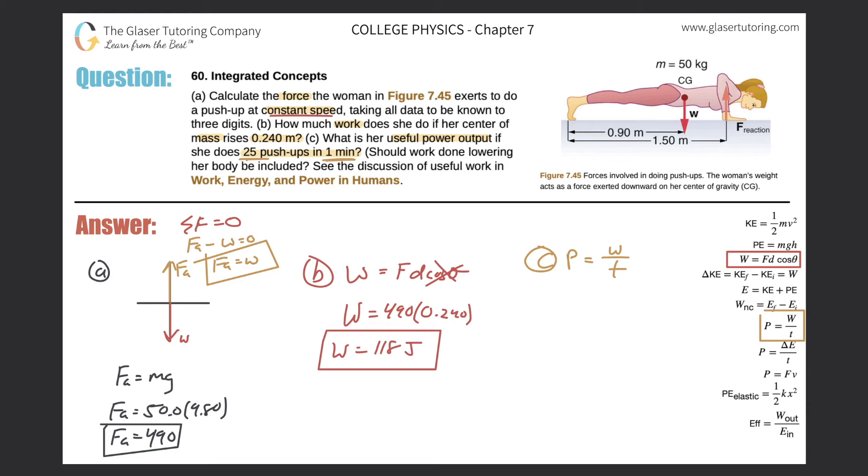Okay, so power here will then be equal to the work. So again, I'm going to take the work done in one of those phases, 118 joules, and then multiply that by 25 push-ups. And then realize that each push-up involves two parts, and then divide that now by the time. And they told us it was one minute, but I wanted it in seconds, so I got to take that and multiply by 60.